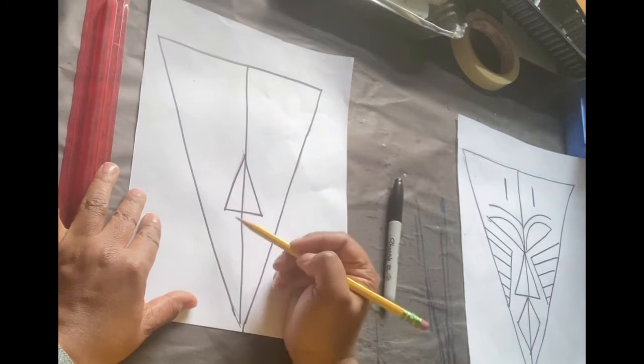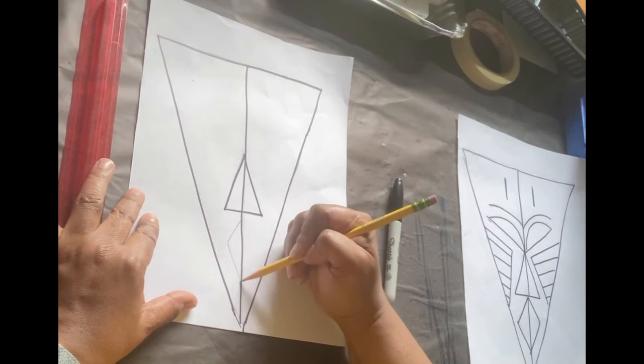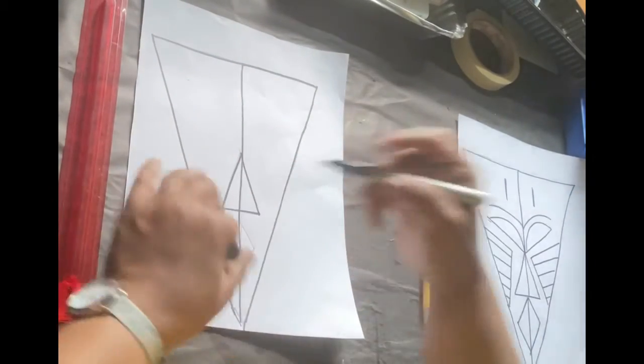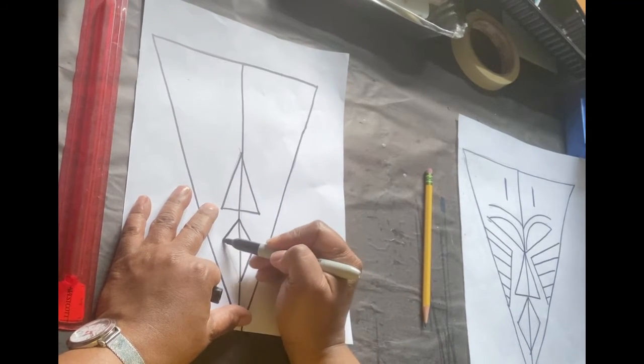We're going to create a rhombus or a diamond. One, two, and one, two. This is our rhombus or a diamond for the mouth.